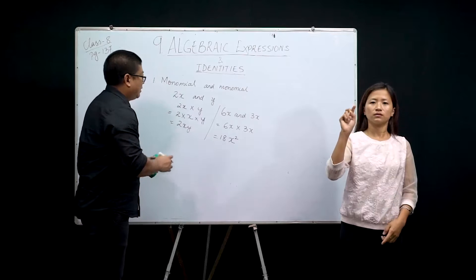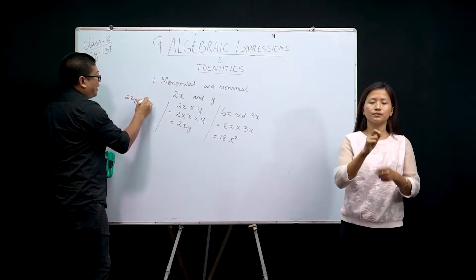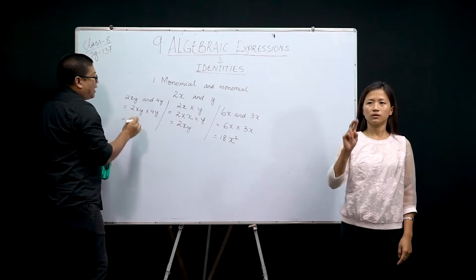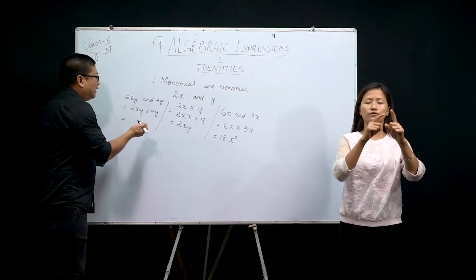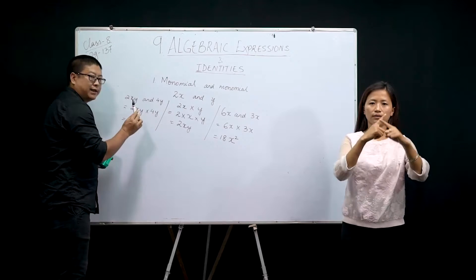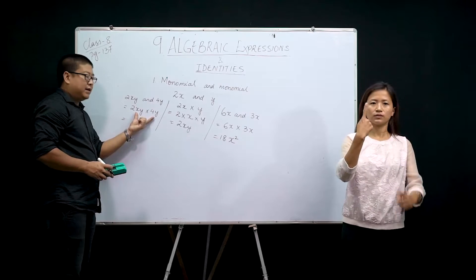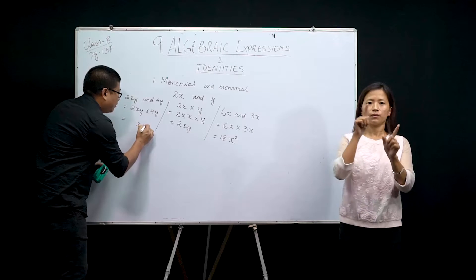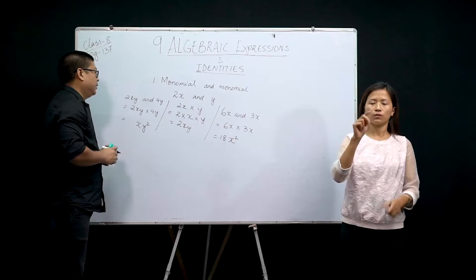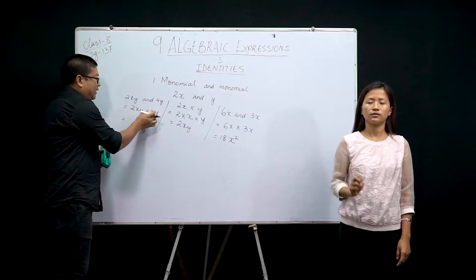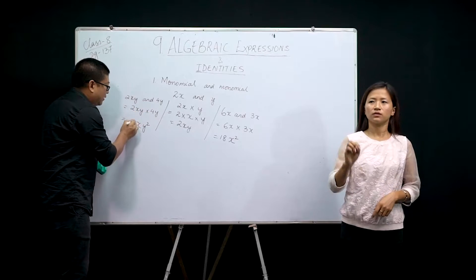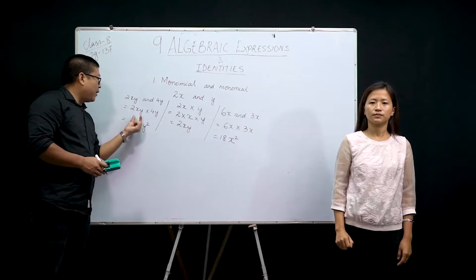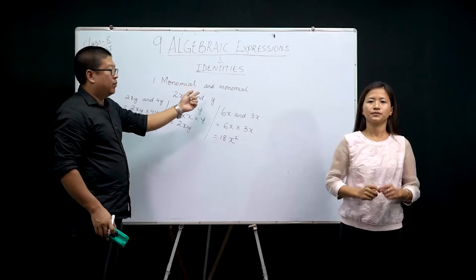Let's take another example: 2xy into 4y. We have only one x here and no x in the other term, so we keep 1x. We have 1y here and 1y there, making 2 y's total, so y into y gives y². Now multiply the coefficients: 2 into 4 is 8. The final answer is 8xy², meaning 1x and 2 y's. This is how you multiply monomial and monomial.